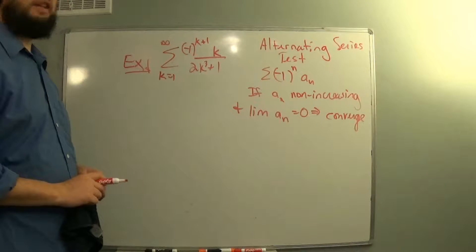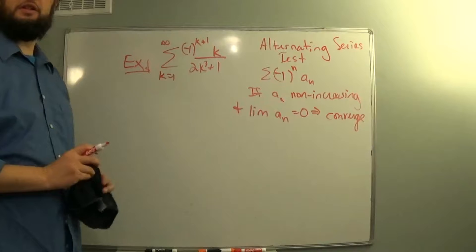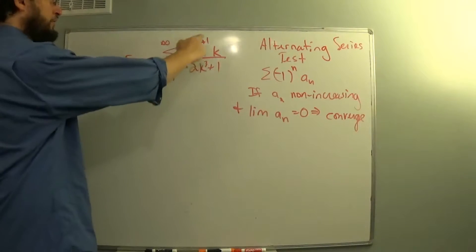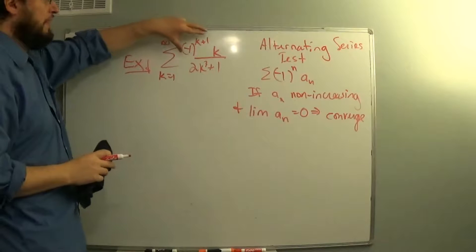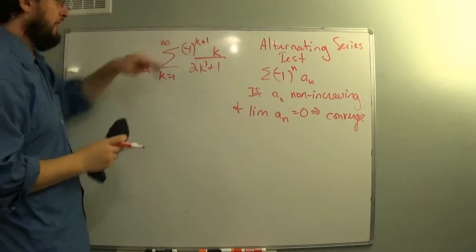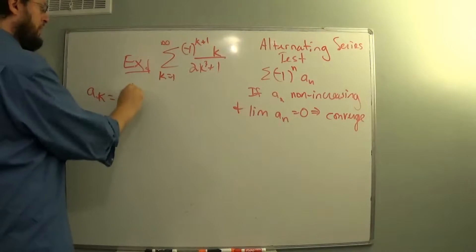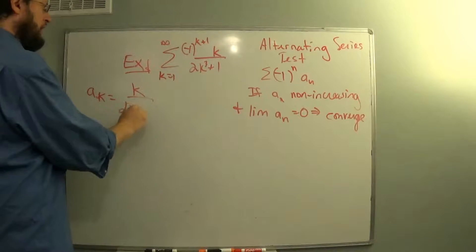Let's apply the alternating series test to this series to determine if it converges or diverges. It's alternating because of the minus 1 to a power. So all that I care about right now, ak will be the non-alternating part: k over 2k cubed plus 1.